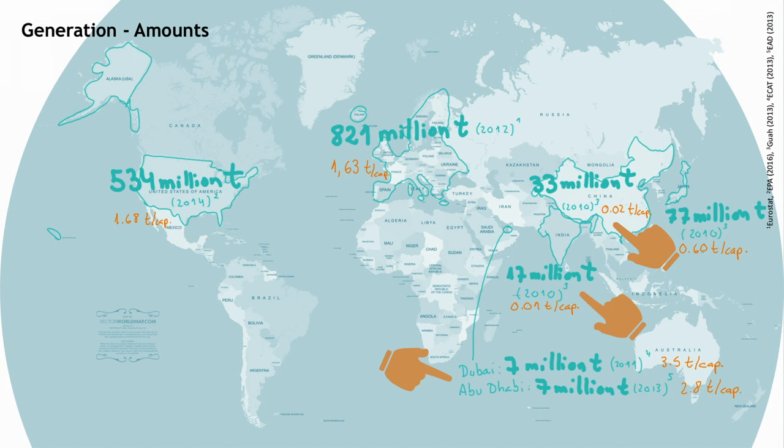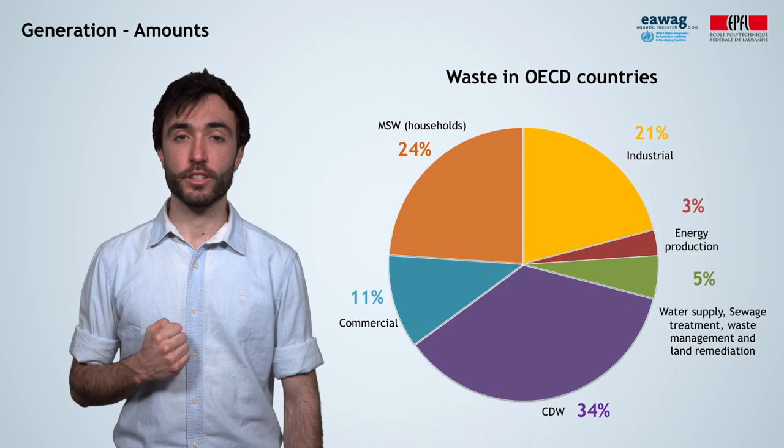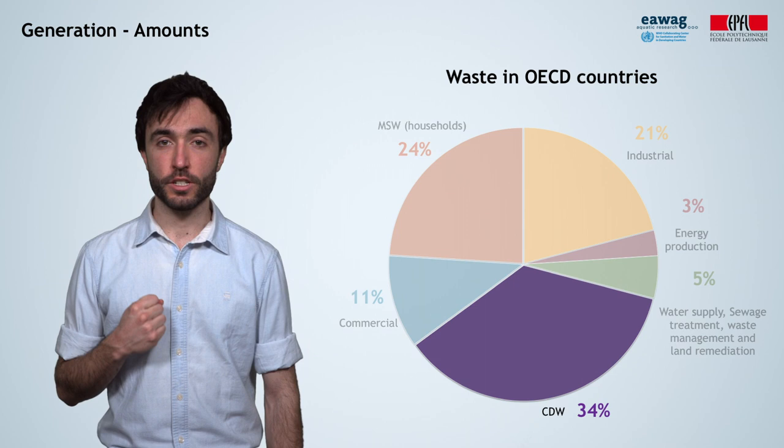However, most published figures are mere estimates and often countries do not report their actual generated amounts. Therefore, these figures need to be interpreted with caution. What we do know is that construction and demolition waste often represents the largest proportion of total waste generated by weight. In OECD countries, for example, it accounts for 34% of the urban waste generated.